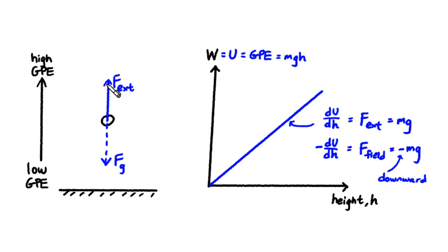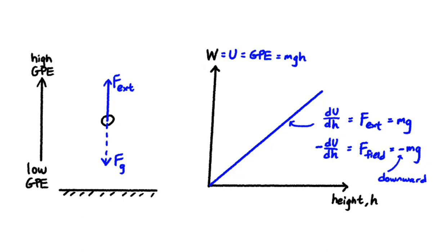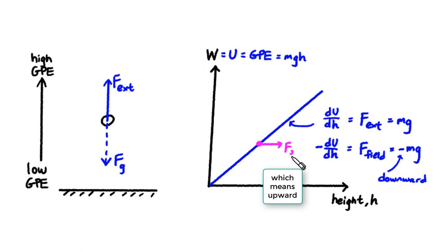There is an important pattern that you must spot. The external force is always pointing towards higher potential energy, because positive work done by the external force increases your potential energy. The field force — the gravitational pull in this case — is always pointing in the opposite direction; it always tries to pull you towards lower potential energy. On the graph, if you're currently at a given point, to increase your GPE you move rightward, so the external force is rightward and the field force must be leftward, pointing where potential energy is lower.